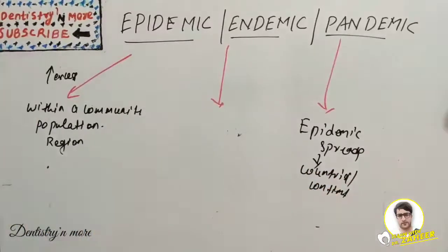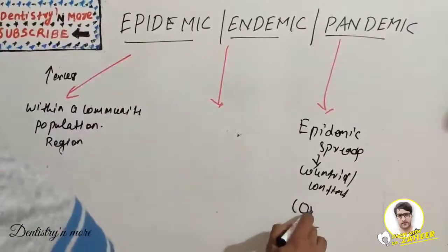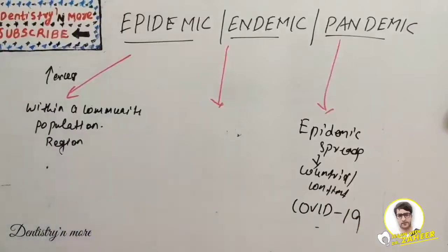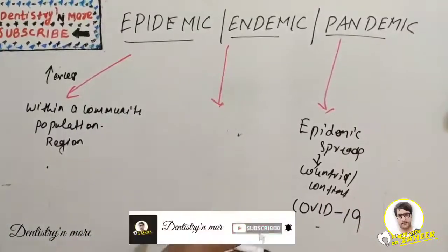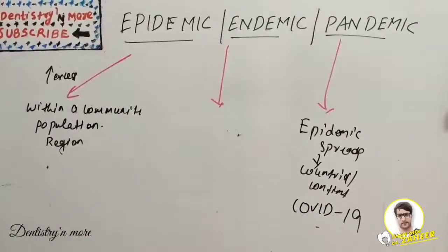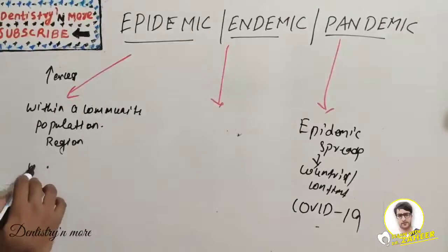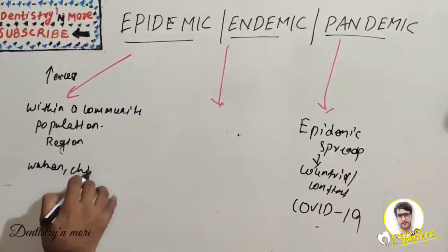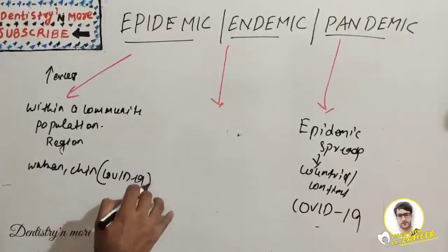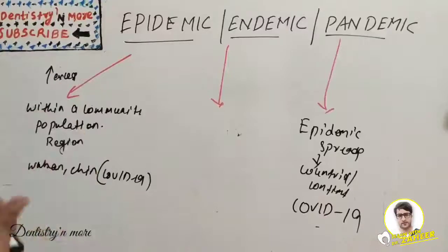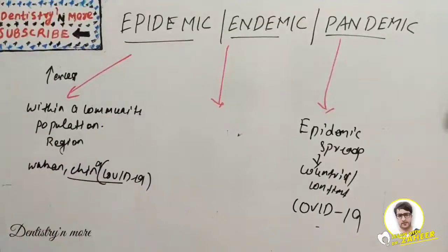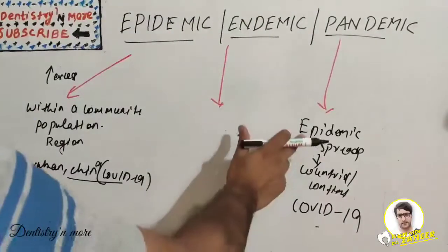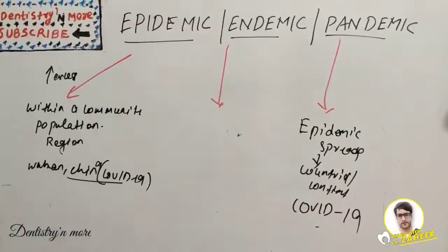A very common example is COVID-19. COVID-19 was first reported in Wuhan, China — at that time, it was an epidemic, with an increased number of cases in one particular region. But when it started spreading to most countries across the world, it became a pandemic. So a pandemic is essentially an epidemic that spreads to many countries and continents.